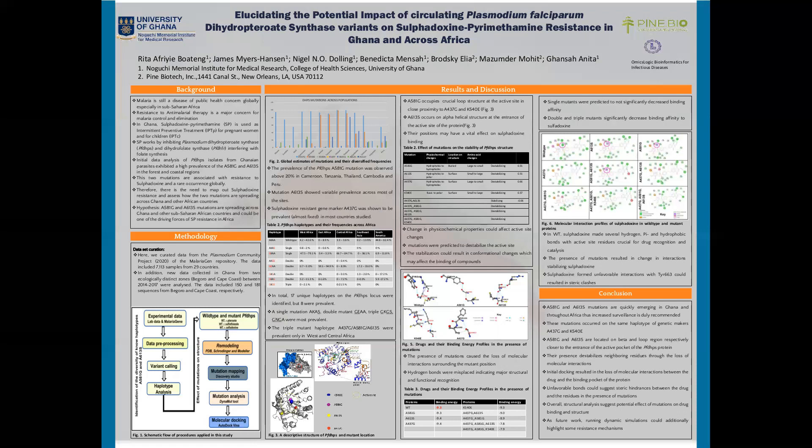Investigation across other regions of Africa and the world showed the presence of alanine 581 glycine and alanine 613 serine in West, Central, and East Africa, and also in Southeast Asia and South America. The key resistance mutation alanine 437 glycine was found at near-fixation in all regions. Lysine 540 to glutamine had a presence of five percent and above in Southeast Asia but less than one percent in other regions, consistent with the literature.